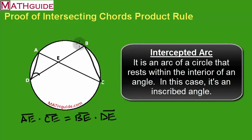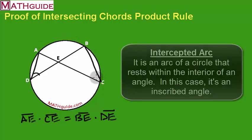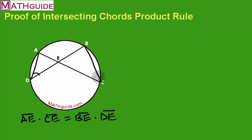Alright, well it turns out that opposite arc AB is another inscribed angle over here. Since these two angles have the exact same arc that they intercept, then I know that these two angles have to be equal.